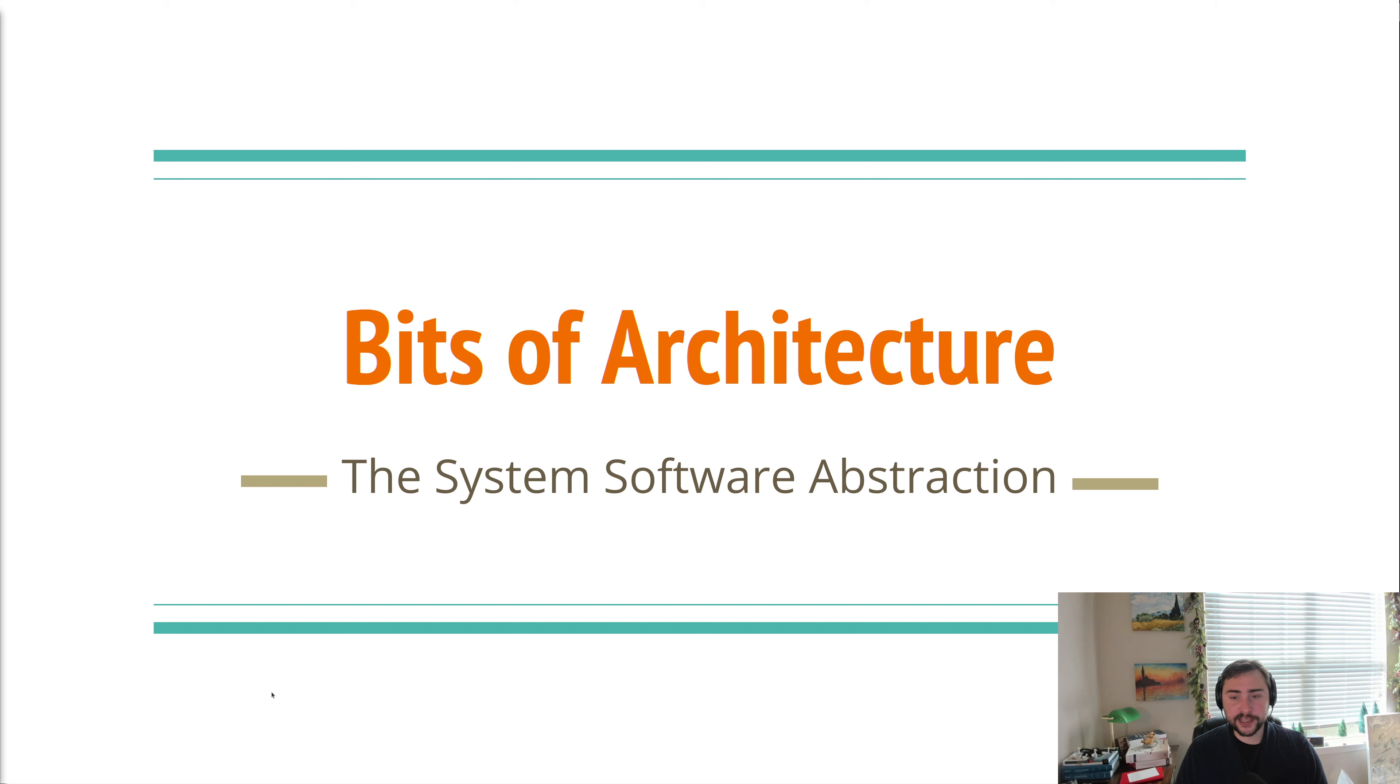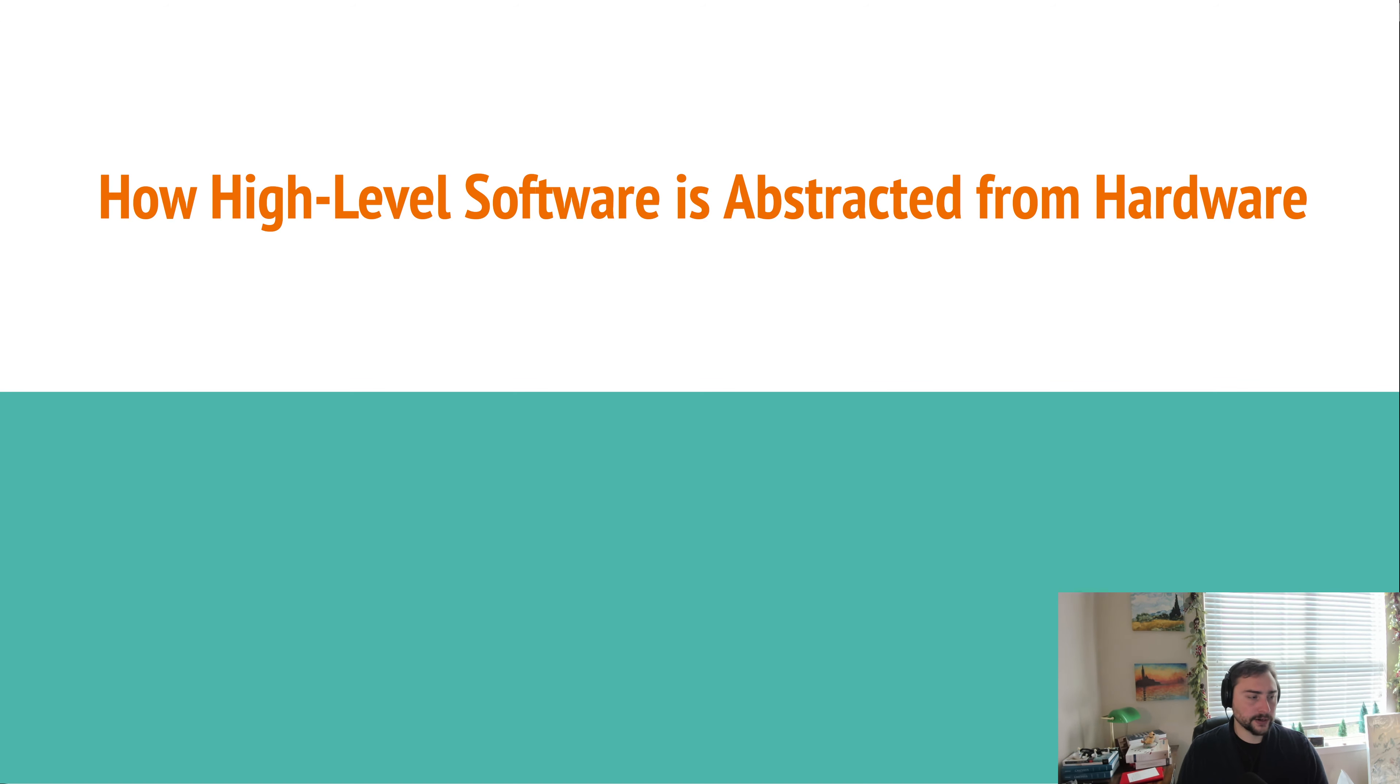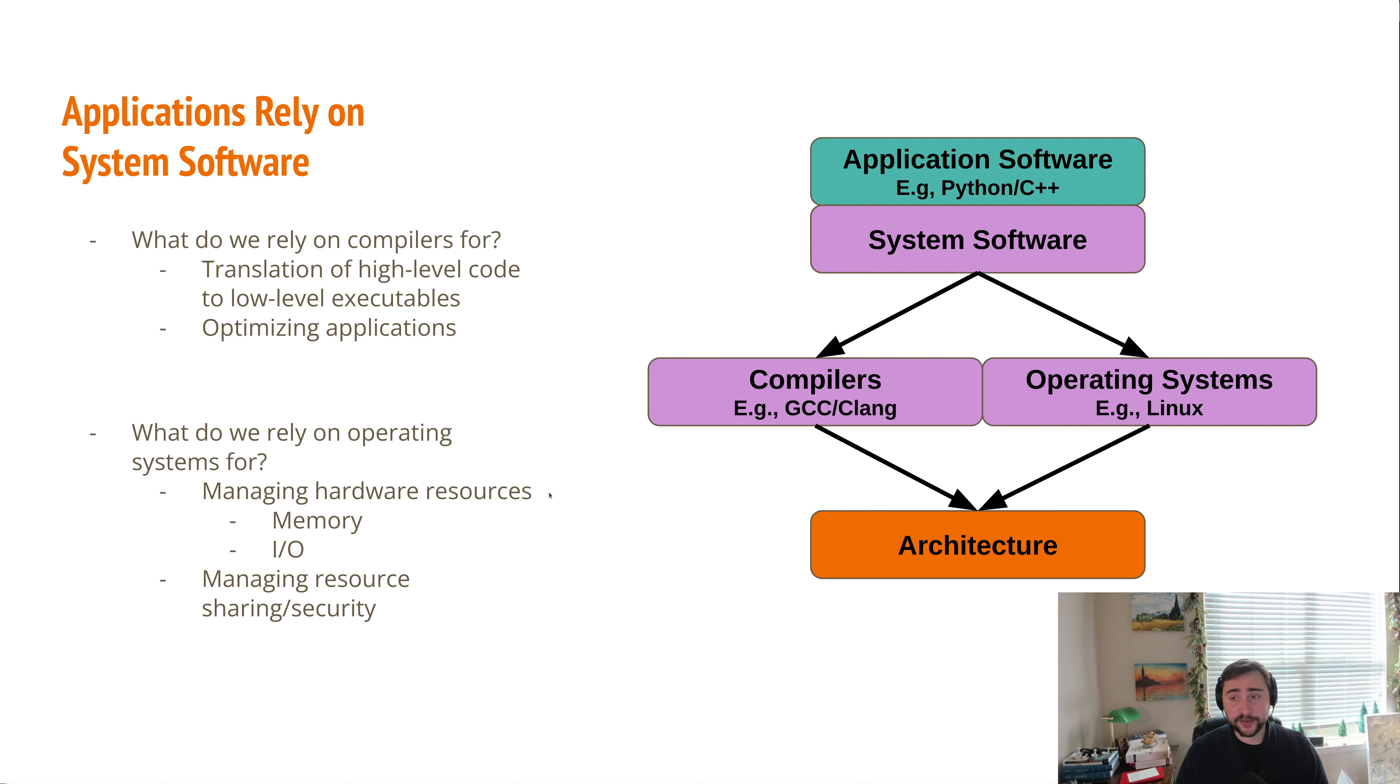In this episode of the series, we're going to be talking about the system software abstraction. One of the things we're concerned about as computer architects is how our high-level software is abstracted from our hardware. As we've mentioned in previous videos, this is done primarily through system software, which sits between our application software and our architecture in these layers of abstraction.